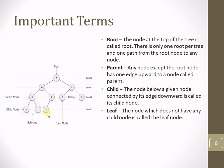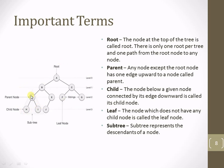A subtree is a portion of the tree. For example, D as a parent node with child nodes H and I forms a subtree of the whole tree. Similarly, the subtree where B is the parent, with D and E as children, and D having H and I, and E having J, forms a subtree of the whole tree whose root is A. Importantly, for a given subtree, D becomes the root node of that subtree.